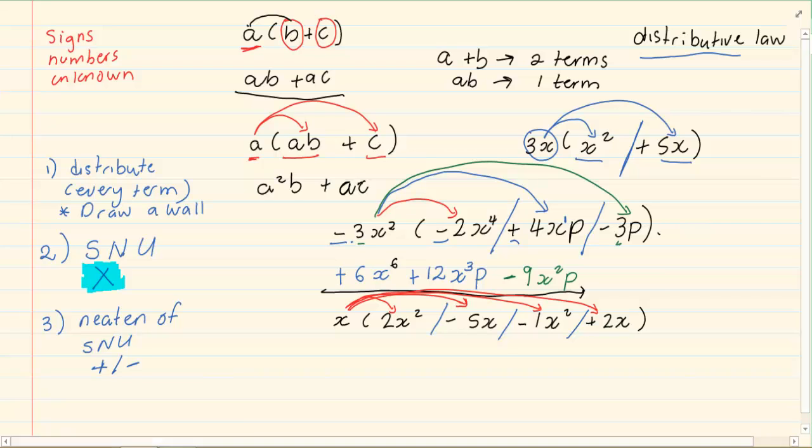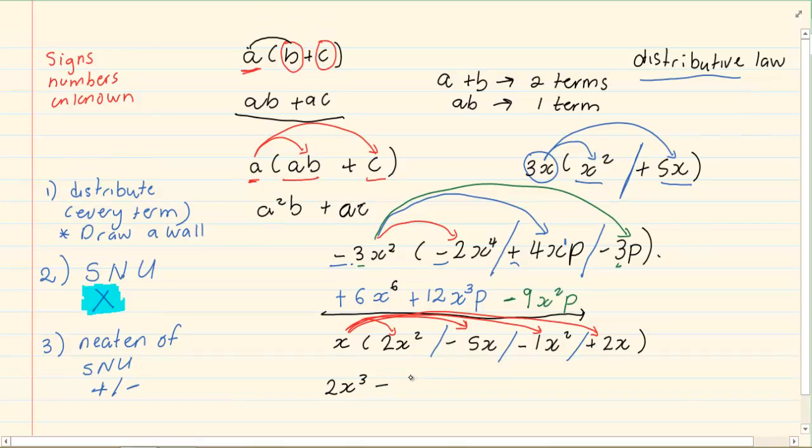Using signs, numbers and unknowns, we are going to end up with 2x to the power 3 minus 5x to the power 2 minus 1x to the power 3 plus 2x to the power 2. Now in doing that, I had used rule number 1 where I drew a wall and then I distributed. Then I used multiplication, signs, numbers and unknowns. Now when you look at the question and you realize that the unknowns are the same, then you have to add or subtract.